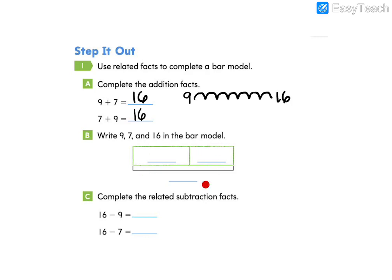Now we'll take those facts and complete our bar model. We need to think that our two parts add up to our whole. So we need to put our addends in the bar model. One of our addends is nine. The other addend is seven. Our whole or our sum is 16.